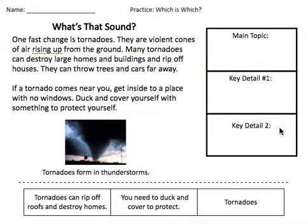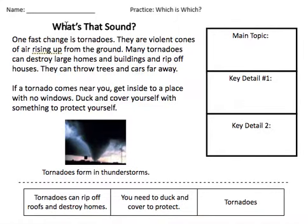Key details, on the other hand, there are at least two here. They are facts about the topic, tell you more about it, and they are usually like a sentence long. They're pretty long. So let's read this passage and then decide which of these three is the main topic and glue it here, and which of these three are the two key details and glue them here.